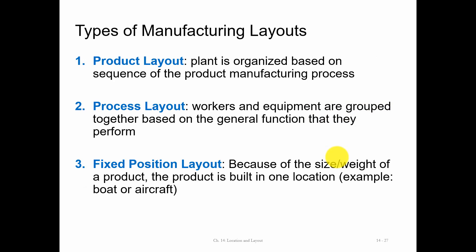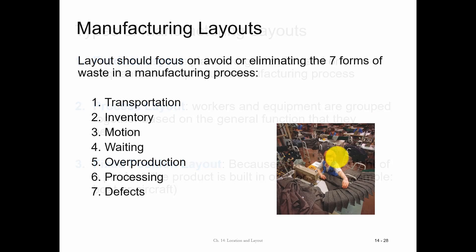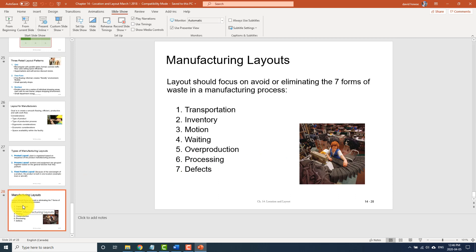Types of manufacturing layouts are focused on avoiding or eliminating the seven forms of waste in the manufacturing process: transportation, the time it takes to get or ship your goods, inventory control, motion — how people move around, waiting time within the layout, overproduction, processing, and defects. That's the slide for Chapter 14 — go through it at least once so when you get the test you can find everything quickly.